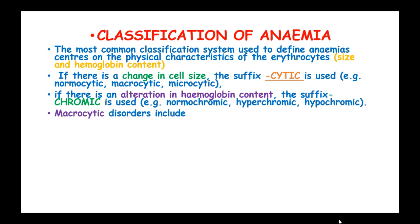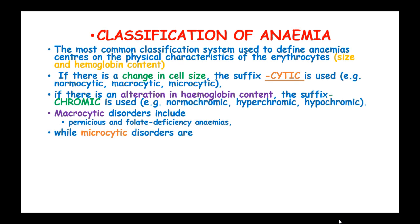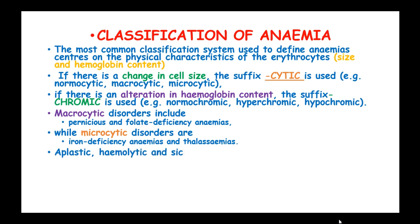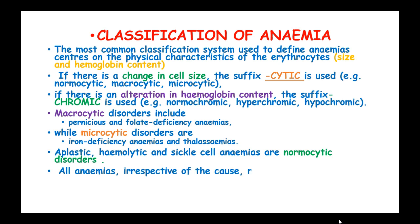Macrocytic disorders include pernicious and folic acid deficiency anemias, while microcytic disorders are iron-deficient anemias and thalassemias. Aplastic, hemolytic, and sickle cell anemias are normocytic disorders. All anemias, irrespective of the cause, result in a reduced oxygen carrying capacity.